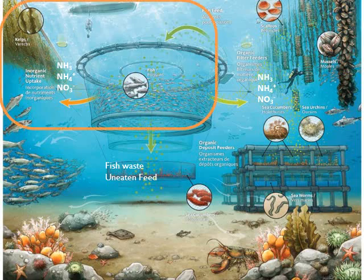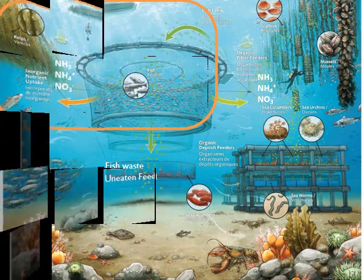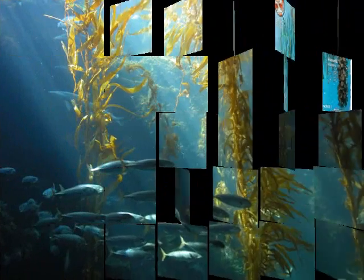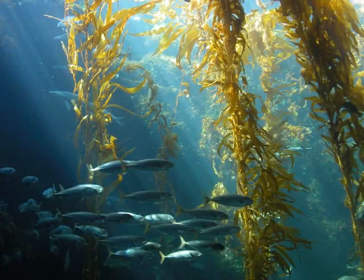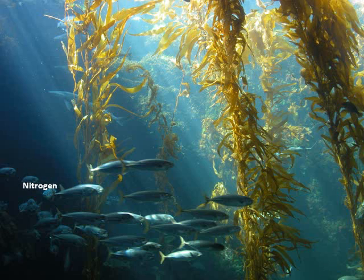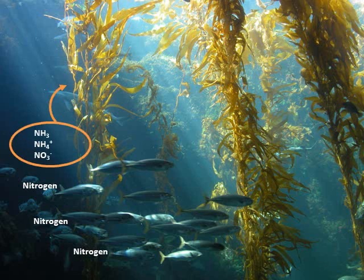Let's see what happens with the kelp. We have the fish — they produce nitrogen in its different forms — and the seaweeds can use this waste nitrogen as a nutrient and grow.